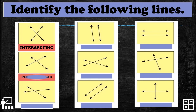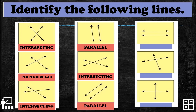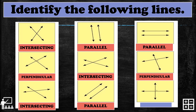Next is perpendicular lines — you can see square corners at the top. Then intersecting lines. Next is parallel lines because the lines do not meet. Then intersecting lines, crossing each other. Then parallel lines, and also parallel lines — lines that do not meet. Second to last is perpendicular lines with four square corners, and the last is also perpendicular lines because of the square corners. Hope you learned something!